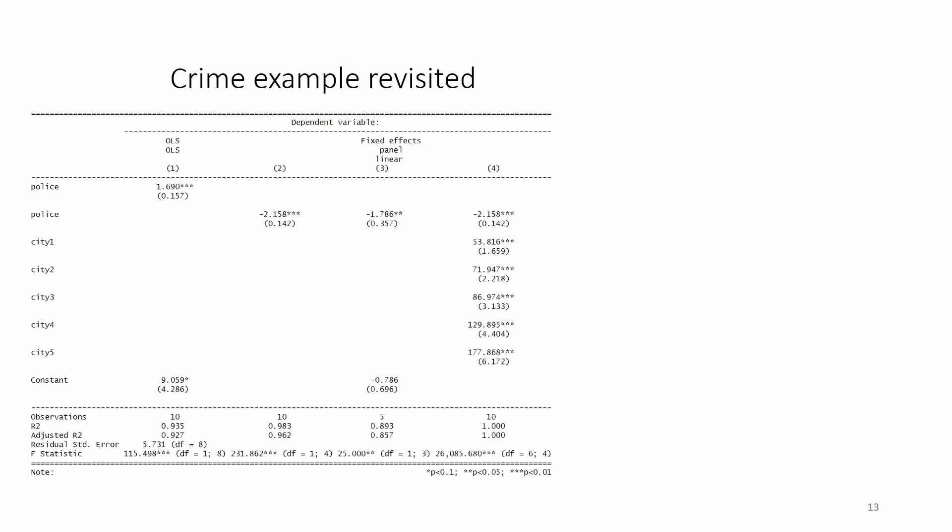This slide compares four regression models on the crime data. Model 1 is the standard OLS linear regression model. The estimated coefficient on police is positive, while we expected it to be negative. This model does badly because it does not take into account the panel structure of the data. Put differently, it fails because it does not take into account unobserved time-invariant heterogeneity.